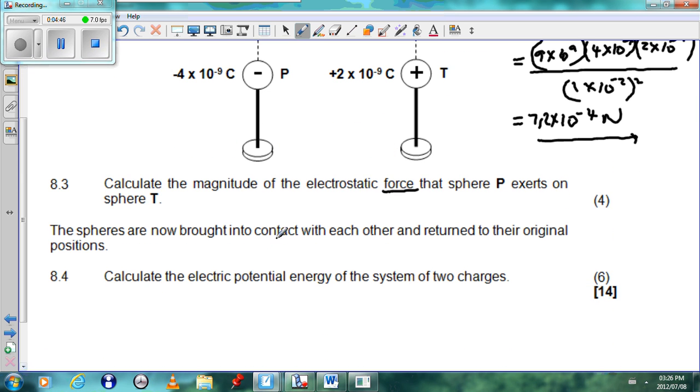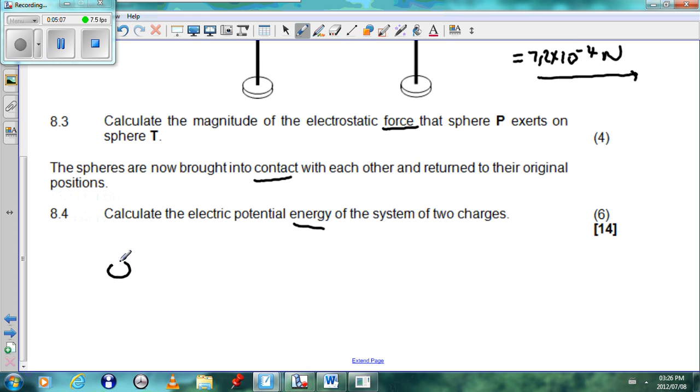The spheres are now brought into contact with each other and return to their original position. Calculate the electrical potential energy of the two spheres. Now here we see that there are two important words. The one is contact and one is energy. So when we see the word contact we know we must look at the equation Q1 plus Q2 divided by 2.